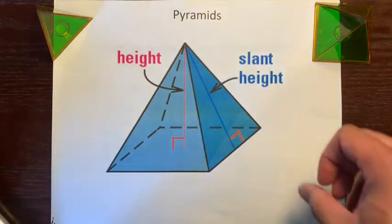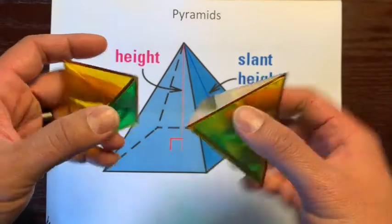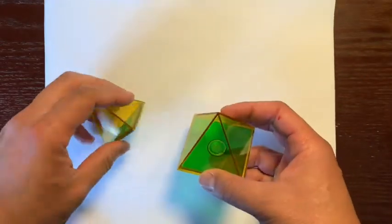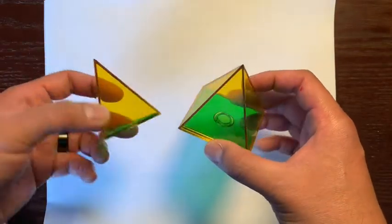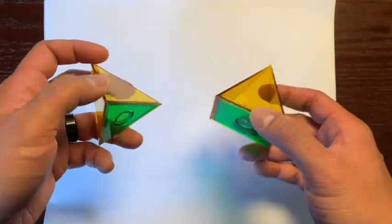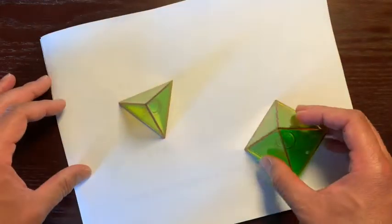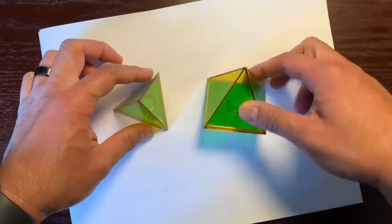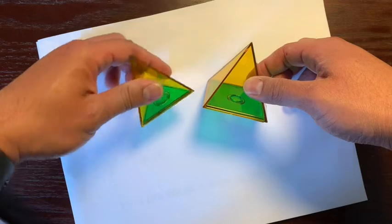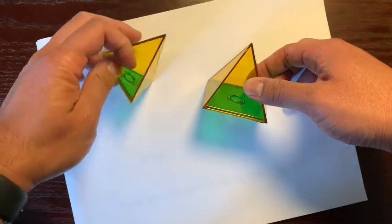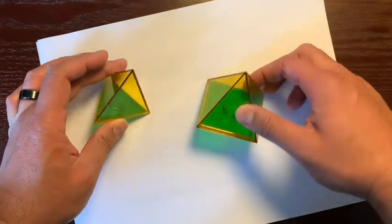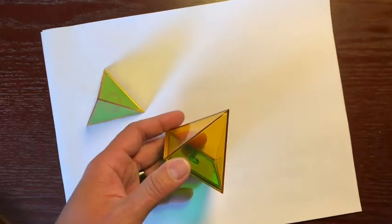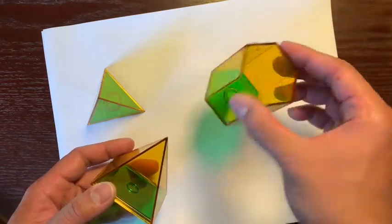First thing about pyramids — let's look at these two solids. These two are pyramids. The biggest characteristic about pyramids is they both have just one base. So we could sit it like this and it would sit on that one base right there. A pyramid just has one base — that's the biggest difference between a pyramid and a prism, which has two bases like this hexagonal prism right here.